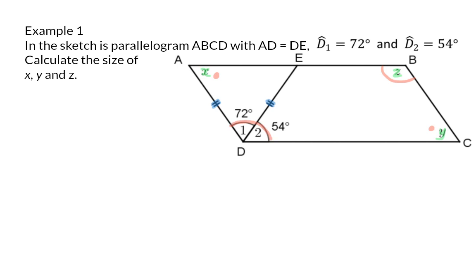Next, they mention that side AD is the same length as DE, which means we have an isosceles triangle. That means we can say that angle A is the same size as angle E, because they are angles opposite equal sides. I'm going to say that angle AED is also X.